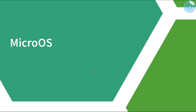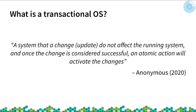First let me introduce what MicroOS is and what a transactional operating system is. A transactional OS can be described as a system where a change, for example an update, does not affect the running system. Once the change is done and is considered successful, there is an atomic action that will activate those changes. For example, if we are updating a package, we are not going to be able to see the new package until we reboot.